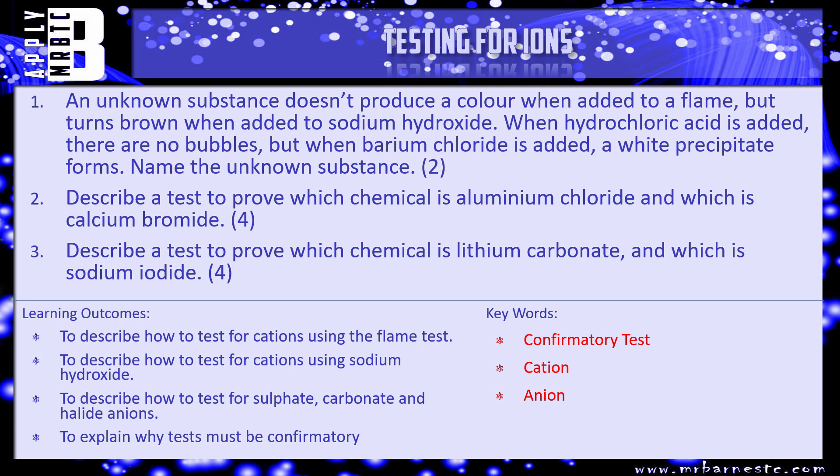I've got three questions for you. Go back to the recap if you're not sure — you need to know the tests for all the different ions before you can answer these. Question 1: an unknown substance doesn't produce a colour when added to a flame but turns brown when added to sodium hydroxide. What's the name of the cation that produces a brown precipitate? When hydrochloric acid is added there are no bubbles, but when barium chloride is added a white precipitate forms. Which anion gives you a white precipitate with barium chloride? Name that unknown substance.